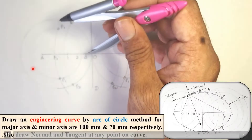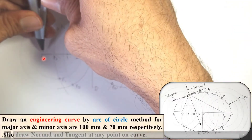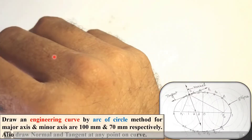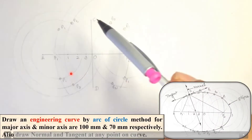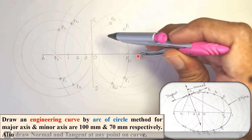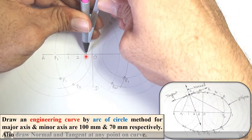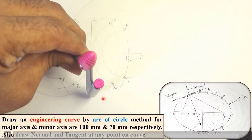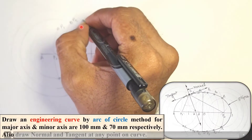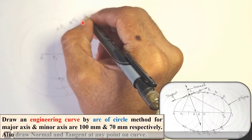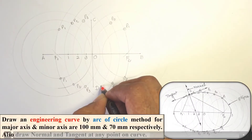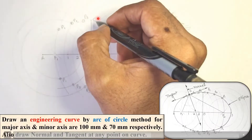For the third round, set the radius equal to A3. Draw arcs with F1 and then F2 as centers. Then set the radius equal to B3, draw an arc with F1 as center, and with the same radius draw an arc with F2 as center. The intersection points are labeled P3 — you get four P3 points.